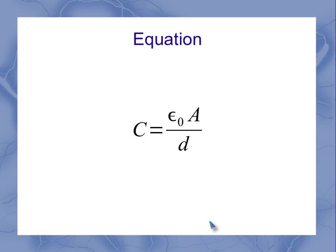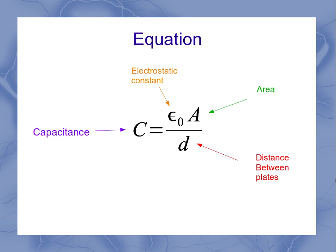So just again, to reinforce this equation for a parallel plate capacitor: C is our capacitance, epsilon naught is our electrostatic constant, A is the plate area, and d is the distance between the plates.